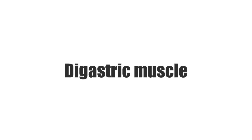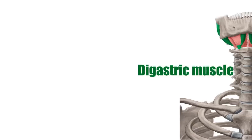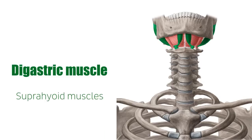Hello again, it's Matt from KenHub, and this tutorial will be discussing the digastric muscle. The digastric muscle is one of the suprahyoid muscles. This group consists of four muscles running from the mandible to the hyoid bone. Together with adjacent tissue, they form the floor of the mouth.